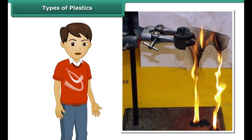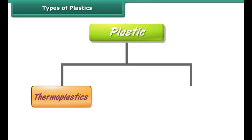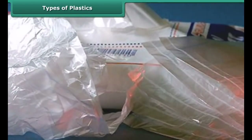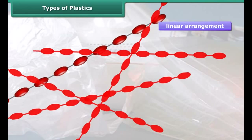Do all plastics have the same type of arrangement of units? No. Some plastics have a linear arrangement whereas others are cross-linked. Have you ever observed what happens when a polythene bag is burnt? It melts and you can see its droplets falling off, apart from the noxious smell it produces. But do all plastics melt upon burning? Let us find out.